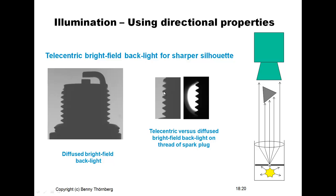Here is a light emitting diode back screen used as an illumination source for the diffused bright field backlight, and here is a special high power LED illumination source equipped with a telecentric lens. Comparing the threads on the spark plug, we can see we get a much sharper silhouette image using this telecentric illumination.